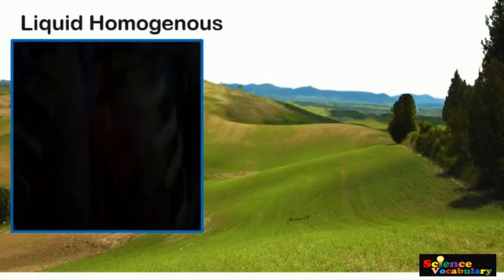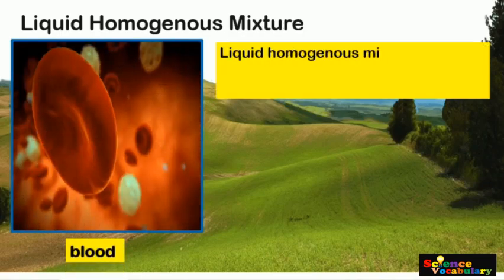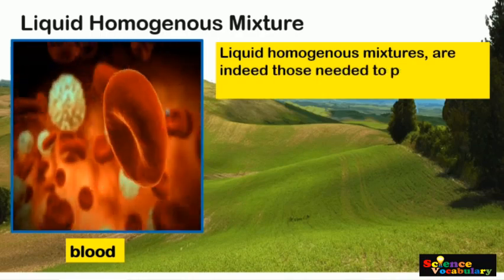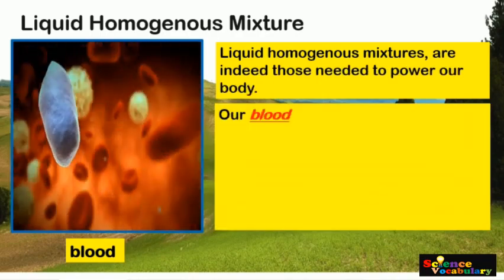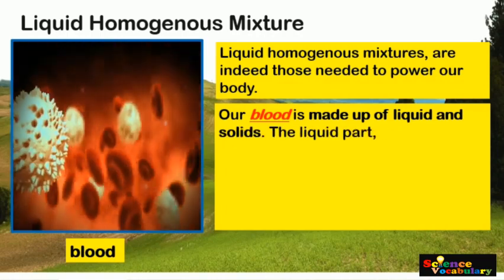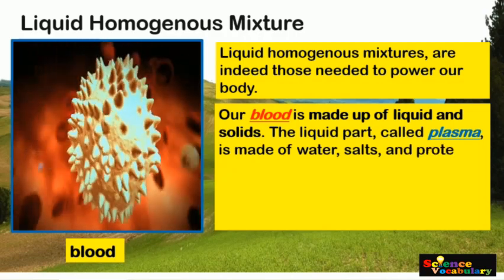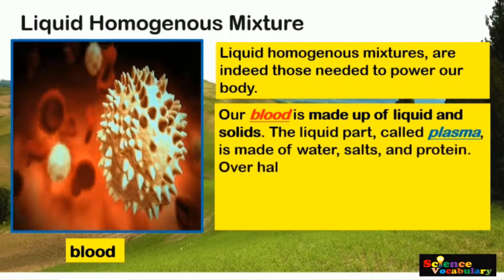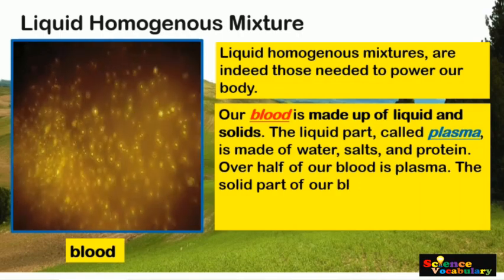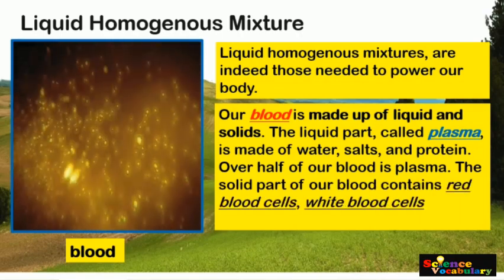Some examples of Liquid Homogeneous Mixtures include those needed to power our body. Our blood is made up of liquid and solids. The liquid part, which is called plasma, is made up of water, salts, and protein. Over half of our blood is plasma. The solid part of our blood contains red blood cells, white blood cells, and platelets.